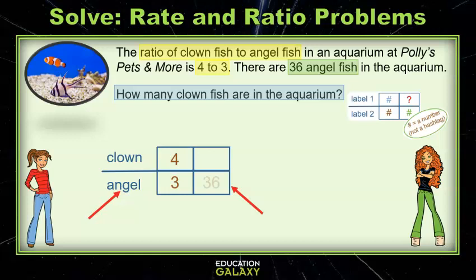Since angel is on the bottom, 36 is in the bottom. We're looking for the number of clownfish. That's right Mandy, so we'll call this x. Once you have it set up, it's easy to solve.